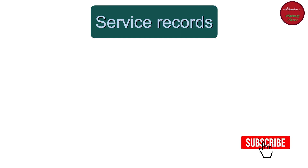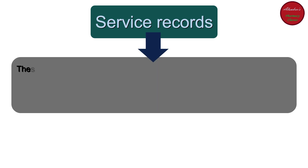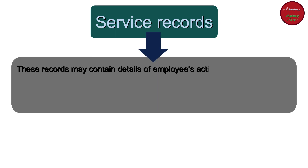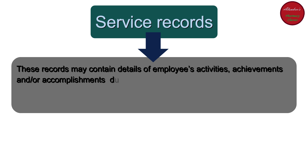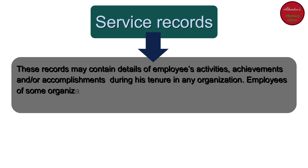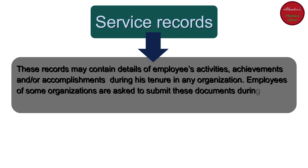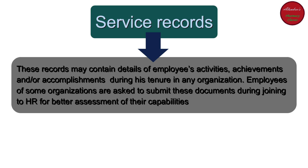The fifth and last type of personal records are service records. These records may contain details of the employee's activities, achievements, and accomplishments during their tenure in any organization. Employees of some organizations are asked to submit these documents during joining to HR for better assessment of their capabilities.